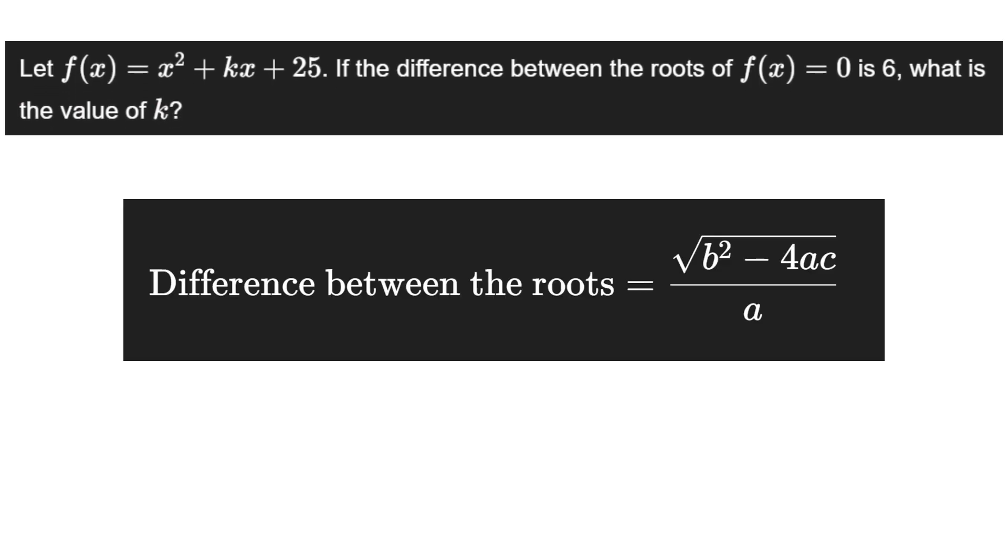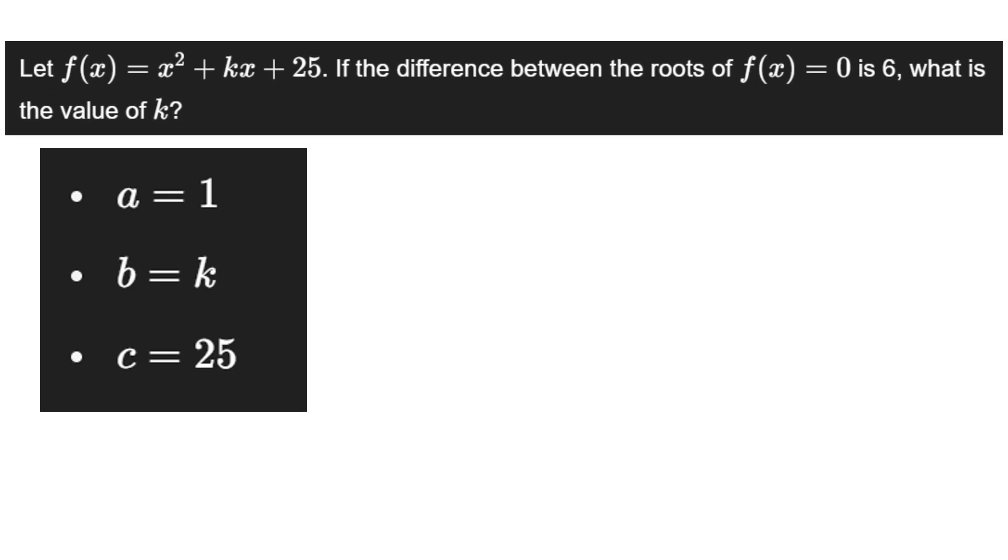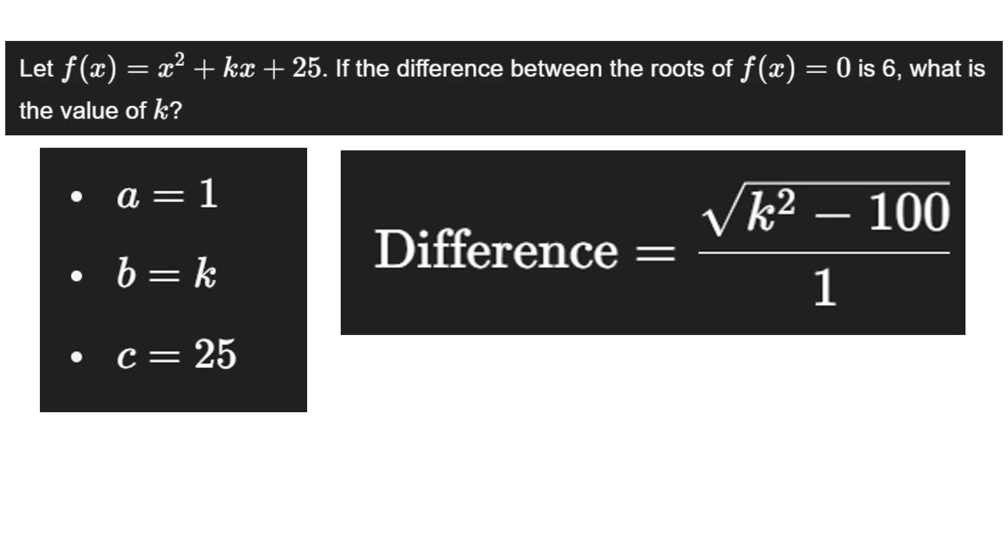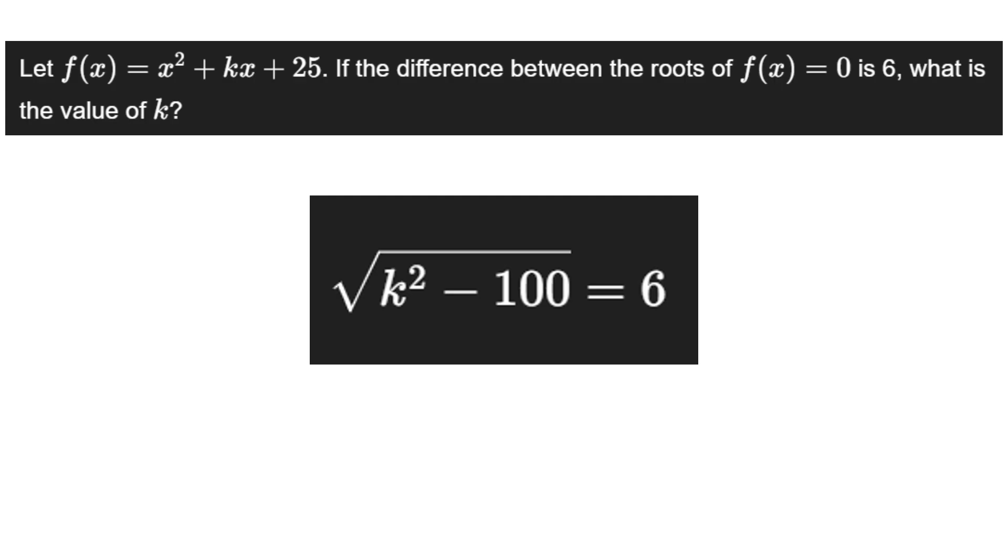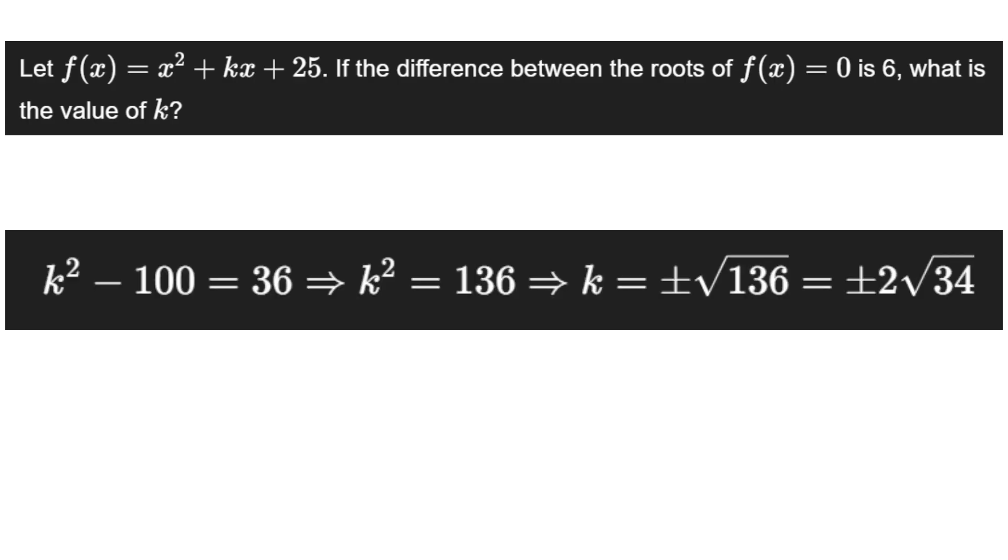Here we have to set up the difference of roots formula. Let's plug our values into the equation, and since we know that the difference between the roots is 6, we can just set these equal to each other. Now we solve and the simplified answer is plus or minus 2 square root of 34.